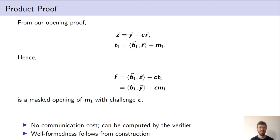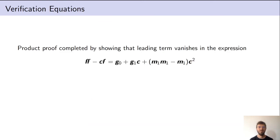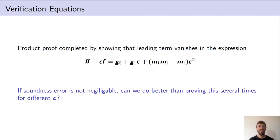These two facts together decrease the communication cost of our product proof. With the verifier holding F, the protocol proceeds in the standard way: construct the quadratic expression F^2 - C·F, group coefficients by powers of C, and observe that the leading quadratic term involves M1^2 - M1. Proving this leading coefficient vanishes proves the desired relation. This is done by committing to the garbage terms (the constant and linear terms), subtracting them, and then proving the resulting polynomial is zero.